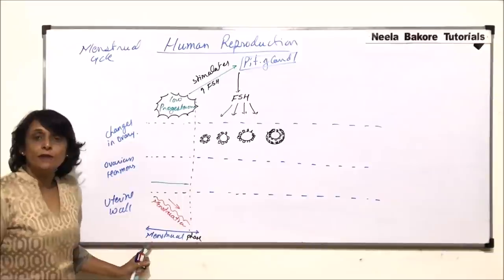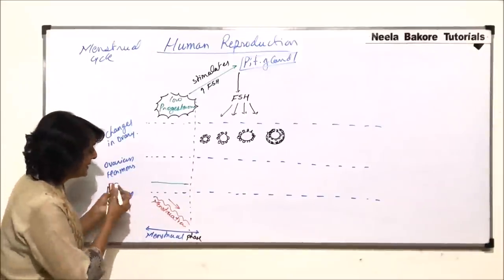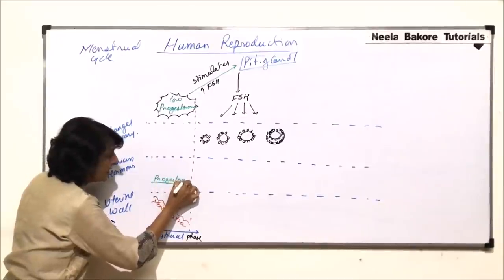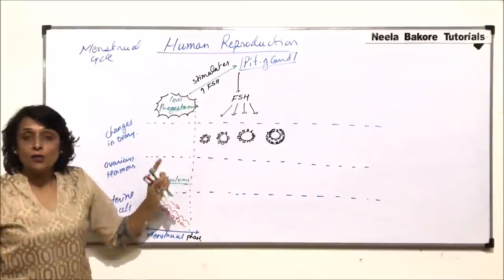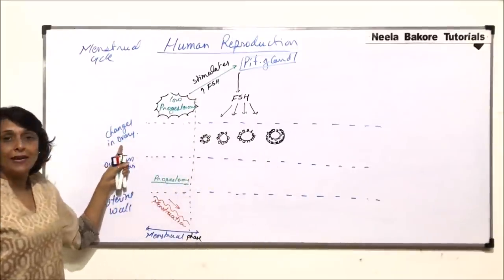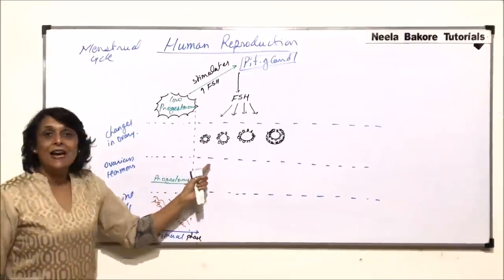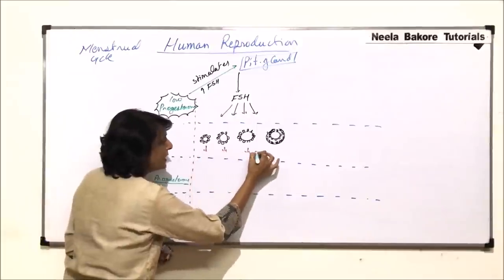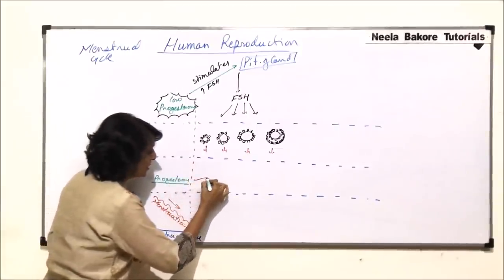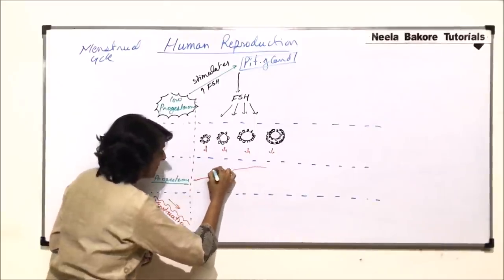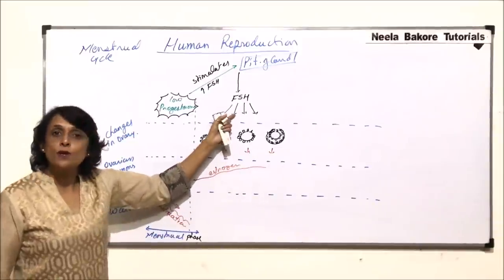Beginning of the cycle starts with menstruation. The endometrial lining is lost due to the low level of progesterone — this green line represents the minimum progesterone level. That low level stimulates the pituitary gland to produce FSH. As soon as FSH is produced, follicles in the ovary start to grow, and the Graafian follicle forms. Follicles then start to produce their hormone — estrogen — so the estrogen level increases. This red line represents the estrogen level.